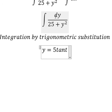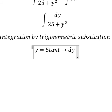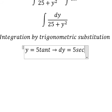And later we simplify dy. We do first derivative of tan t, and you got 5 secant t squared.